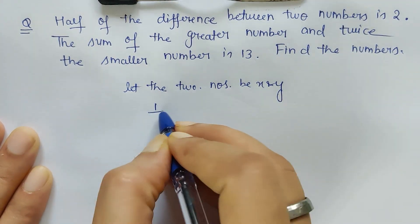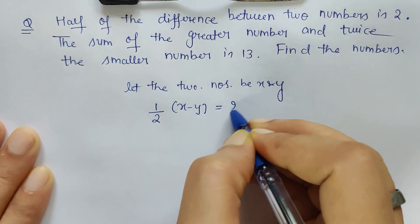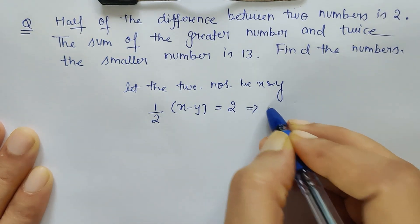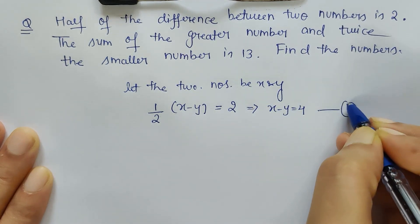Now we are given half of the difference between two numbers, that means half of the difference between the two numbers is 2. So this is my one equation which can further be written as x minus y is equal to 4. Let us say this is equation 1.